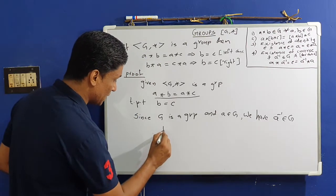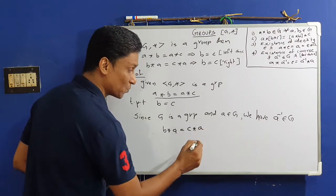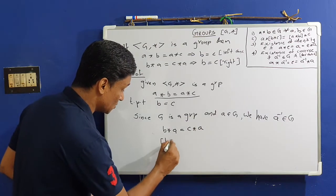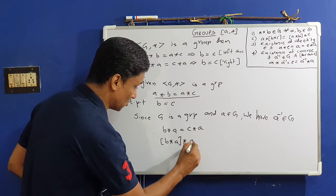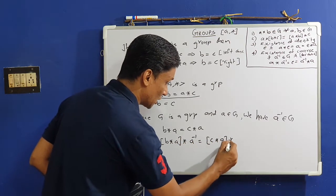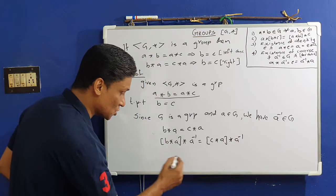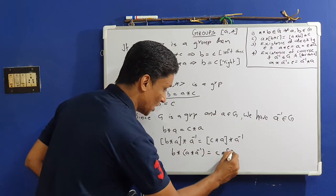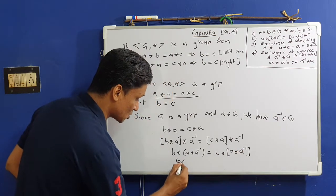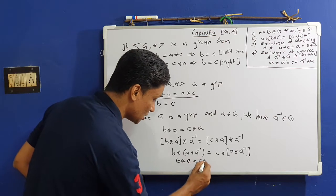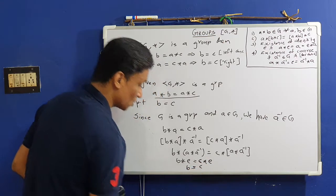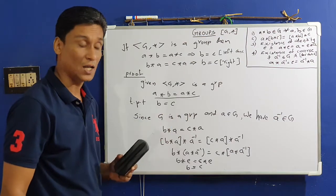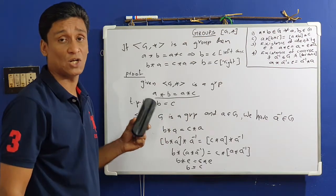For right cancellation: suppose B★A = C★A. Since A is an element of G, A-inverse exists in G. Post-multiplying by A-inverse and using associativity: B★(A★A-inverse) = C★(A★A-inverse), giving B★E = C★E, therefore B = C. This is the right cancellation law.